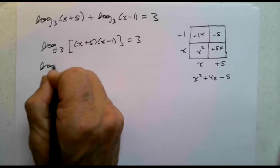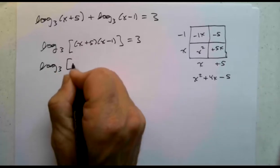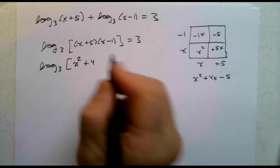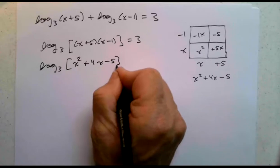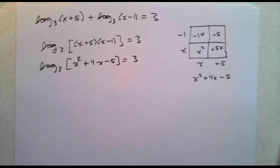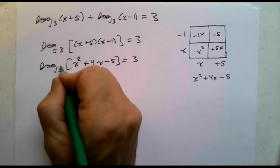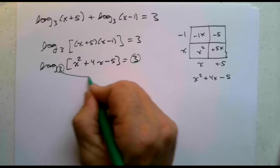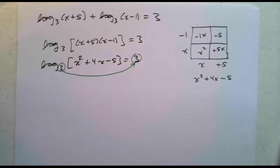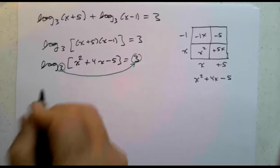So I have log base 3 of x squared plus 4x minus 5 equals 3. So now let's look at our base and our exponent. Our base is 3, our exponent is 3. So 3 to the third power equals all of that stuff, x squared plus 4x minus 5.